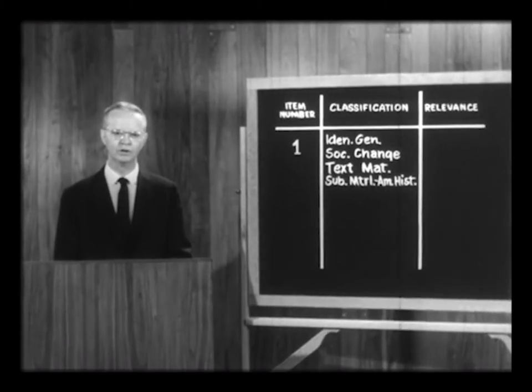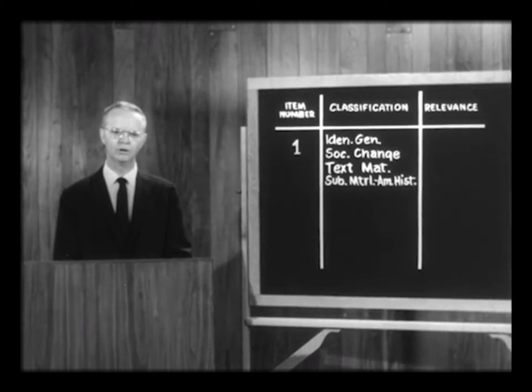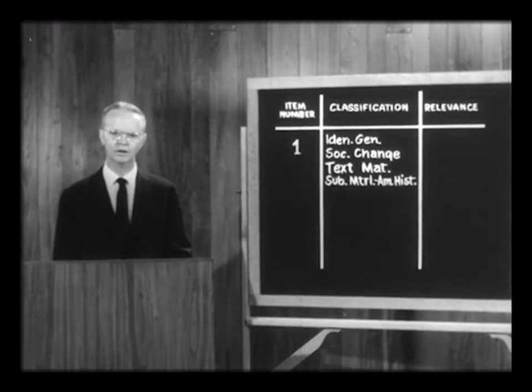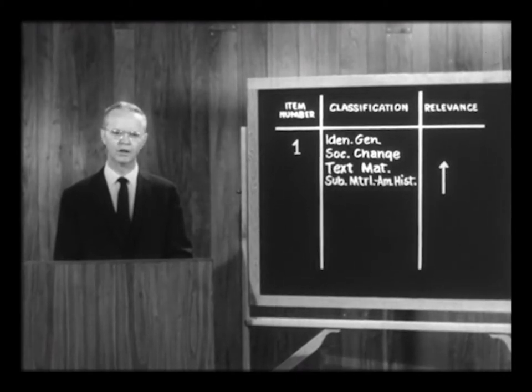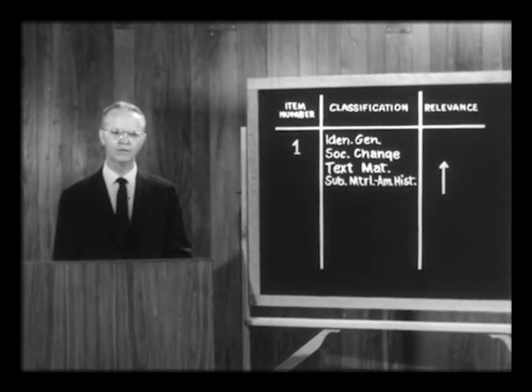Now, back to our scheme for examining a test. Having classified the first item, the teacher must judge how relevant it is to his own teaching. Is the item taught? Should it be taught? Is it too easy or too difficult for your students? How important is it? Give the item a relevance rating of 0 to 5 — a 0 for an item considered inconsequential or irrelevant, a 5 for one closely related to your local objectives and student capabilities. Proceed through all items, then compare average relevance ratings across the tests you are considering.